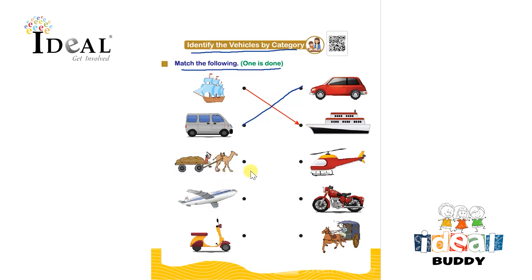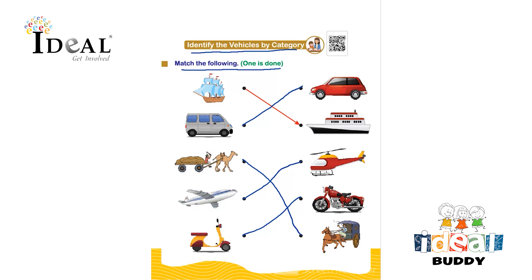So they have to identify the similar category: camel cart with the horse cart, aeroplane with the helicopter, scooter with the motorcycle. So here the child has to identify the similar category of vehicles, match them, and complete the worksheet.